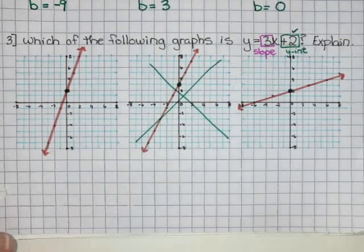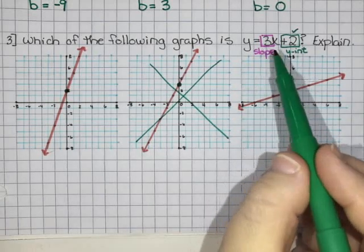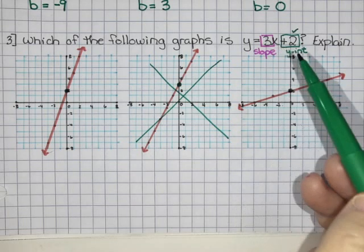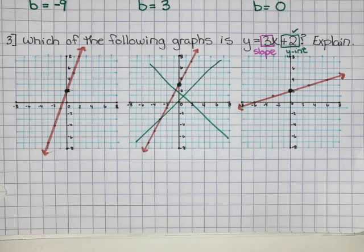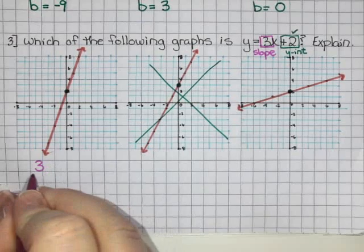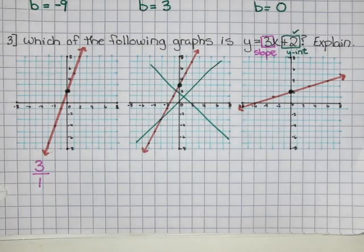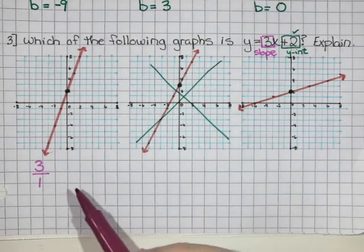Now the next part is to use the slope. Slope is usually a fraction, and 3 doesn't look like a fraction, but 3 is secretly 3 over 1. If you don't see a denominator, it always has a secret denominator of 1. When we were doing our investigation, we noticed that the number on top moves it up and down, and the number on the bottom moves it side to side.